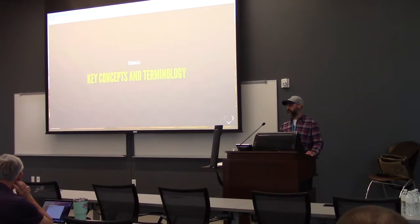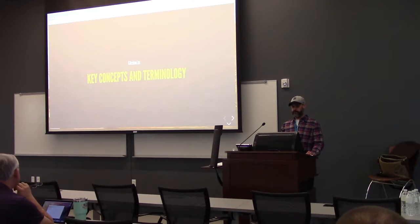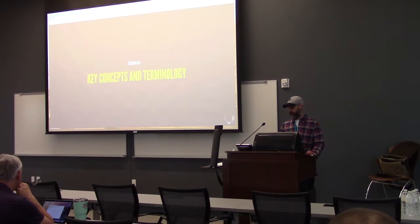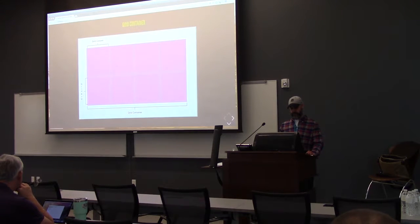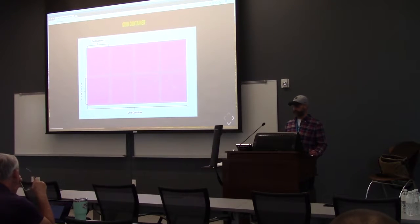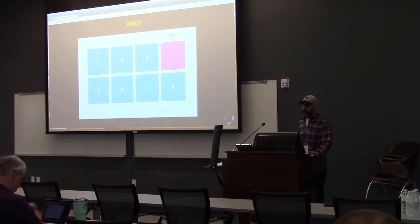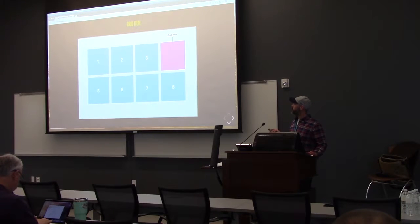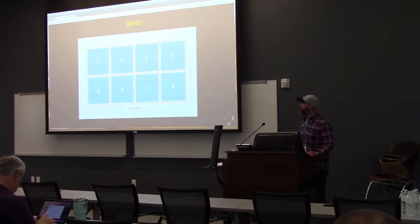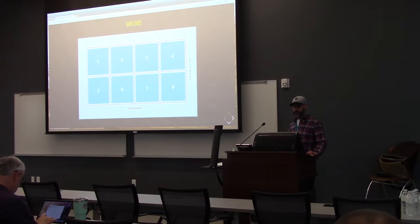I'm going to begin by walking through some key terms and concepts, and then we'll get into a couple of actual examples. A grid container is what we've already talked about. A grid item will be any item that's a direct child of the container. The vertical and horizontal lines that divide the grid and separate the columns and rows are called grid lines. They're numbered left to right and top to bottom.